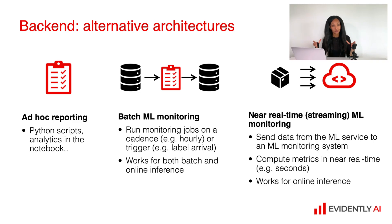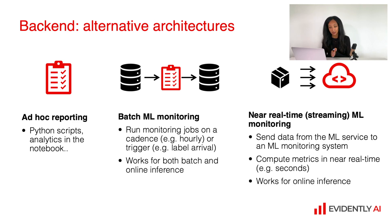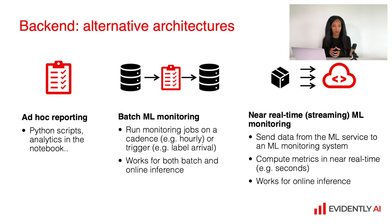What you need to do to build a batch machine learning monitoring backend is create a pipeline with a step for metric calculations and schedule this job. The idea is that you have some cadence — for example, run this monitoring job every 10 seconds, every minute, or maybe hourly. Or you can run this monitoring job on a trigger, for example, as soon as a new batch of data arrives or as soon as you get a new batch of labeled data.